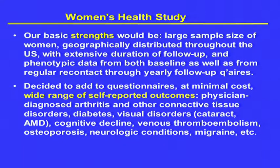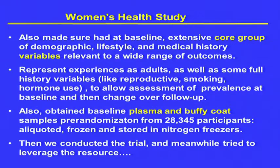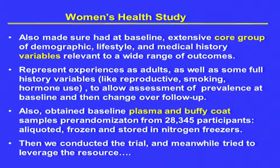We limited it to a total of four pages, because after four pages people don't complete it anymore. We also made sure we had an extensive core group of demographic, lifestyle, and medical history variables — including reproductive history, smoking, and hormone use — so we could do prevalence at baseline and change in risk factors over time. We also obtained baseline plasma and buffy coat samples from 70% of participants. We aliquoted, froze, and stored them in nitrogen freezers in three remote locations, but had no more money to do anything more with them at that time.